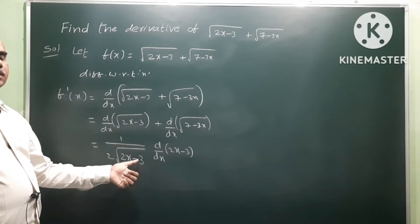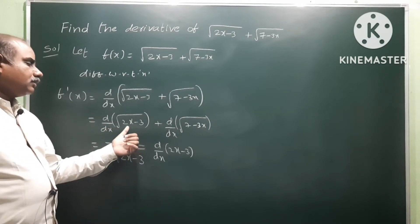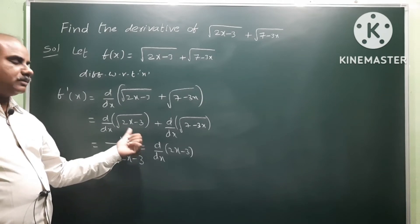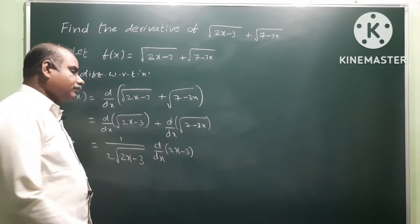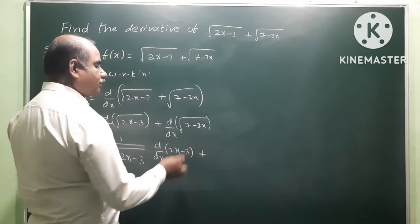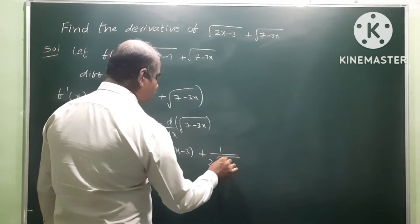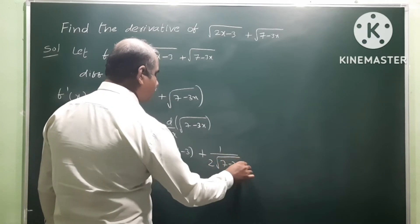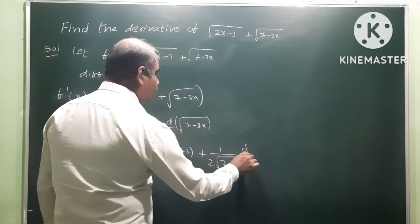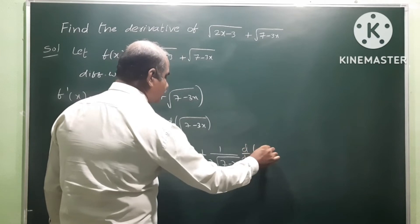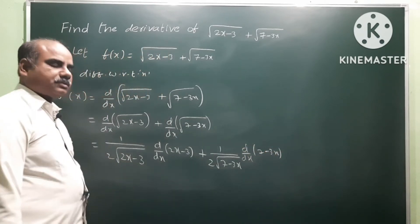1 by 2 root x. For 2x minus 3, the same thing applies: the derivative of root x is 1 by 2 root x. That means 1 over 2 root of 7 minus 3x. But it is not just x, it is 7 minus 3x, so we have to differentiate that using the chain rule.